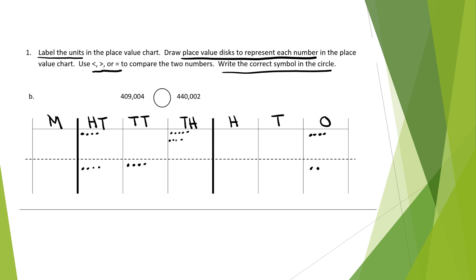Now I compare. I look at the largest place value first. So I'm going to look at hundred thousands. They both have 4. And because they're the same, I go to the next value, ten thousands. The top number has zero and the bottom number has 4. 4 is greater than zero. So I know that this is my bigger number.